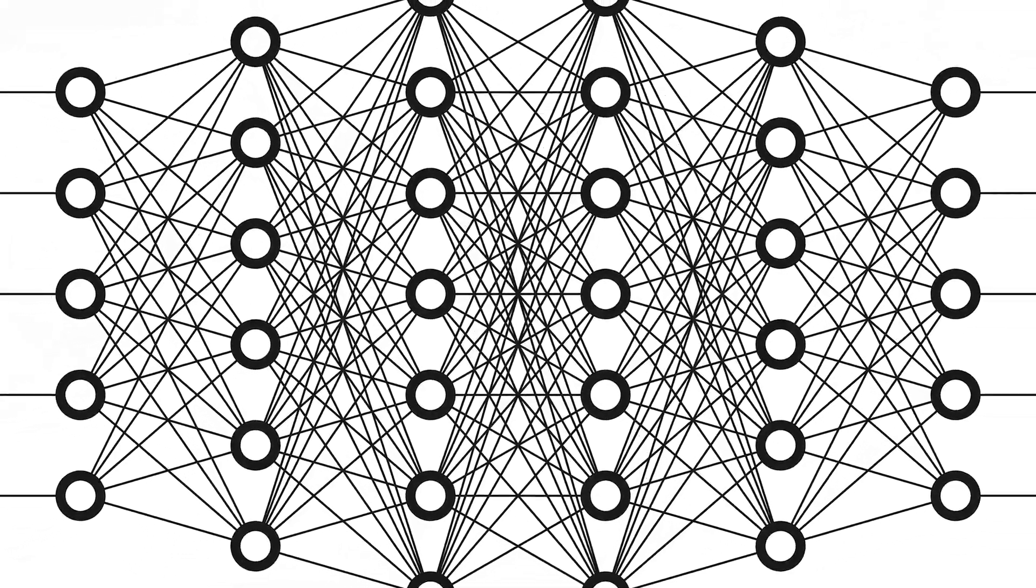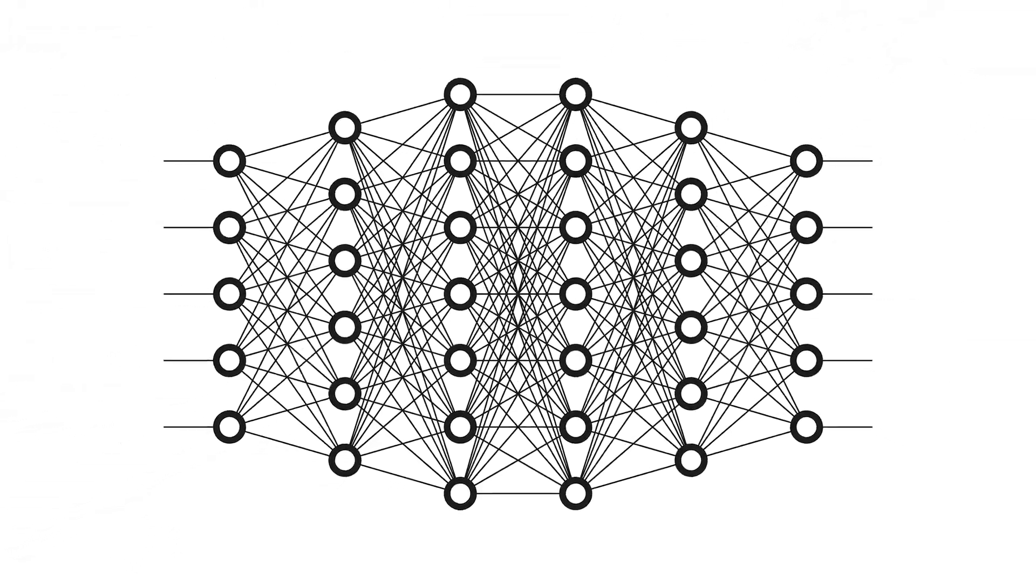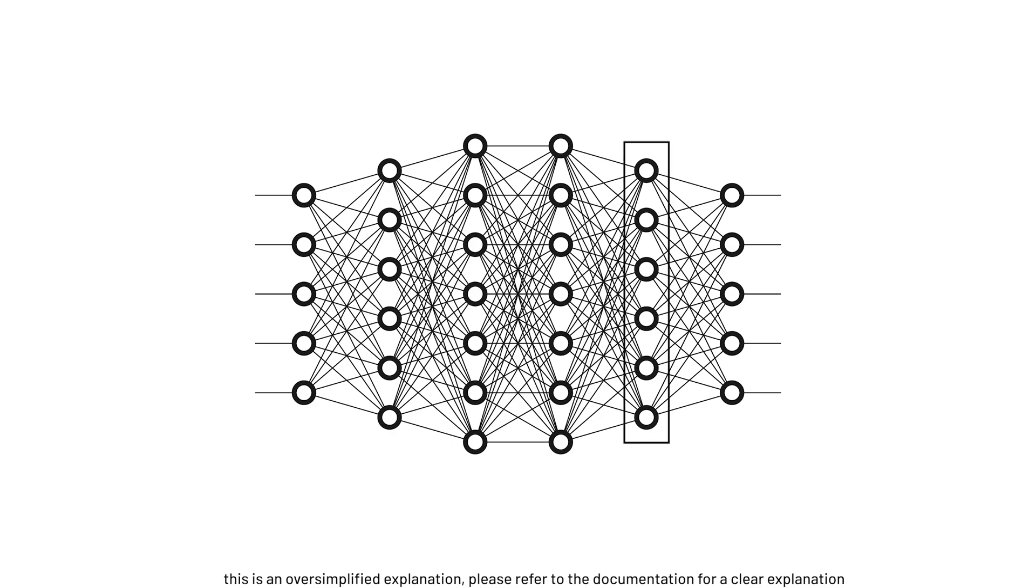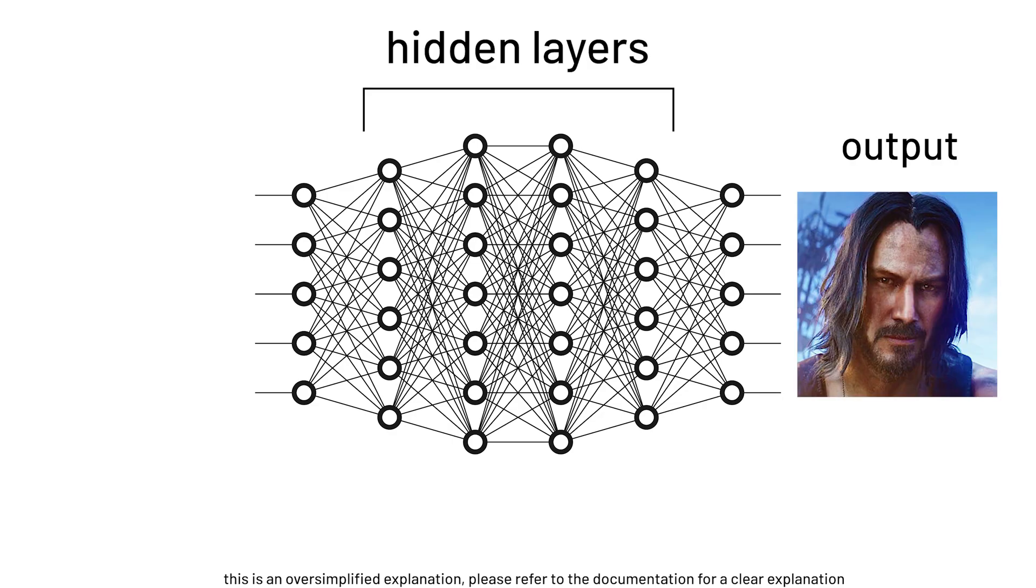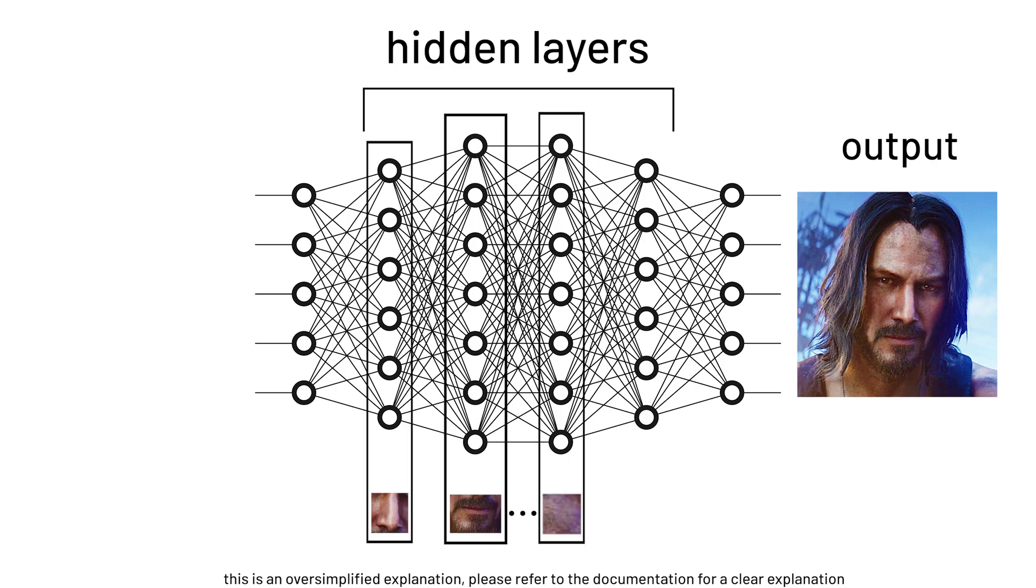The thing about using deep learning to generate faces is that inside the neural network, there are layers and layers of hidden layers that are determining the features of the face, from large details such as the nose or the mouth to small details like the skin or even the lighting of the generated face.